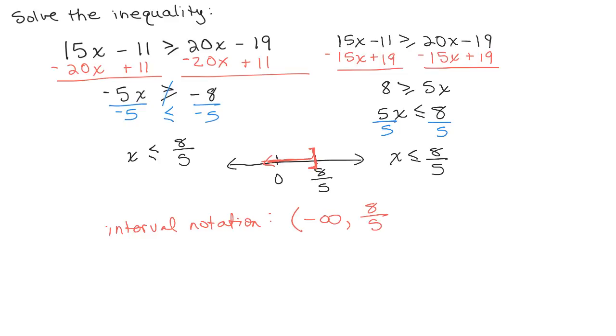If it was less than 8 fifths, we'd put a parenthesis. But if it's actually equal to it, we use the bracket.